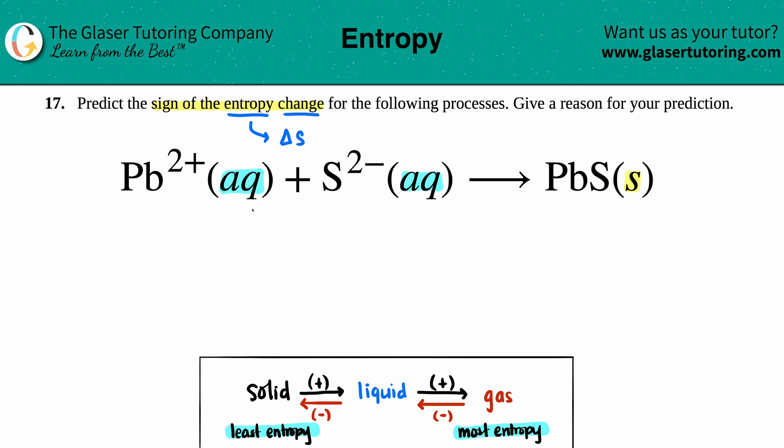If you want to just group these two together, we're basically going from two aqs to one solid. Notice how I don't even care what these are - I don't care about the molecules or ions or compounds, I just care about the states. We're starting off with two aqueous values and going to a solid.